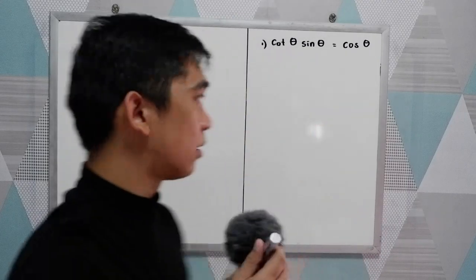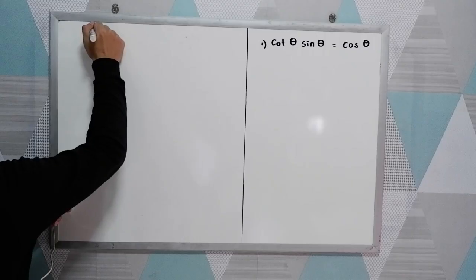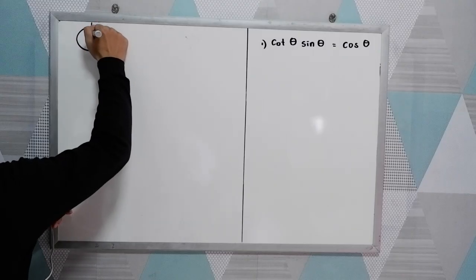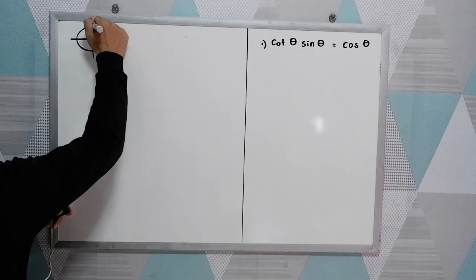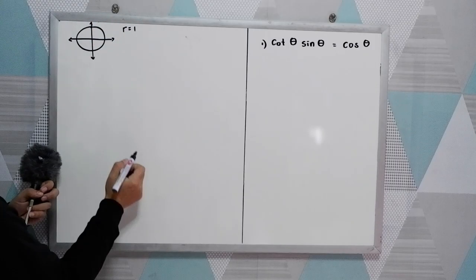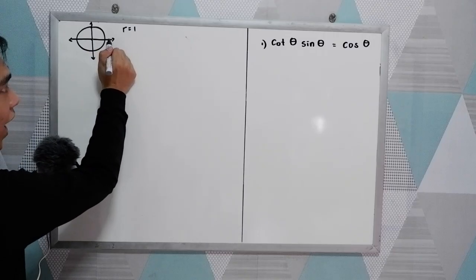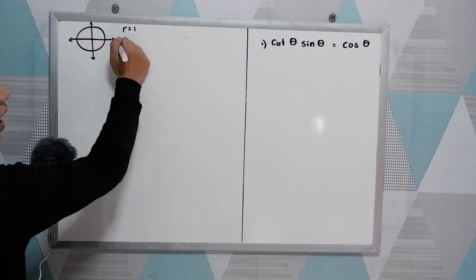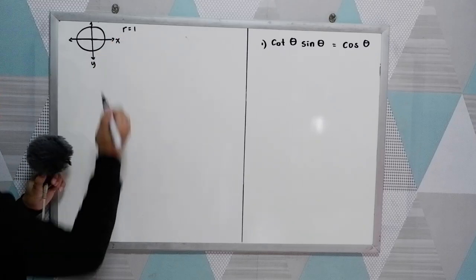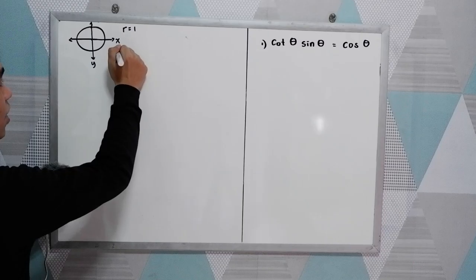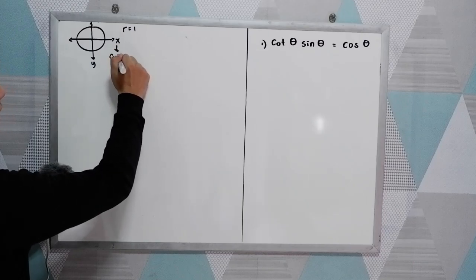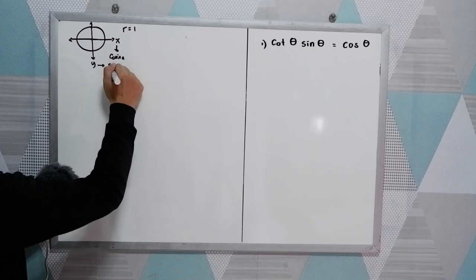Good day everyone, today I will be discussing the fundamental trigonometric identities. From our circular function and the unit circle — when we say unit circle, our radius is equal to 1. So from the point of origin to the right, that is equal to 1. This is our horizontal axis or the x-axis and the y-axis. We know that in our unit circle, x is for our cosine and y is for our sine.